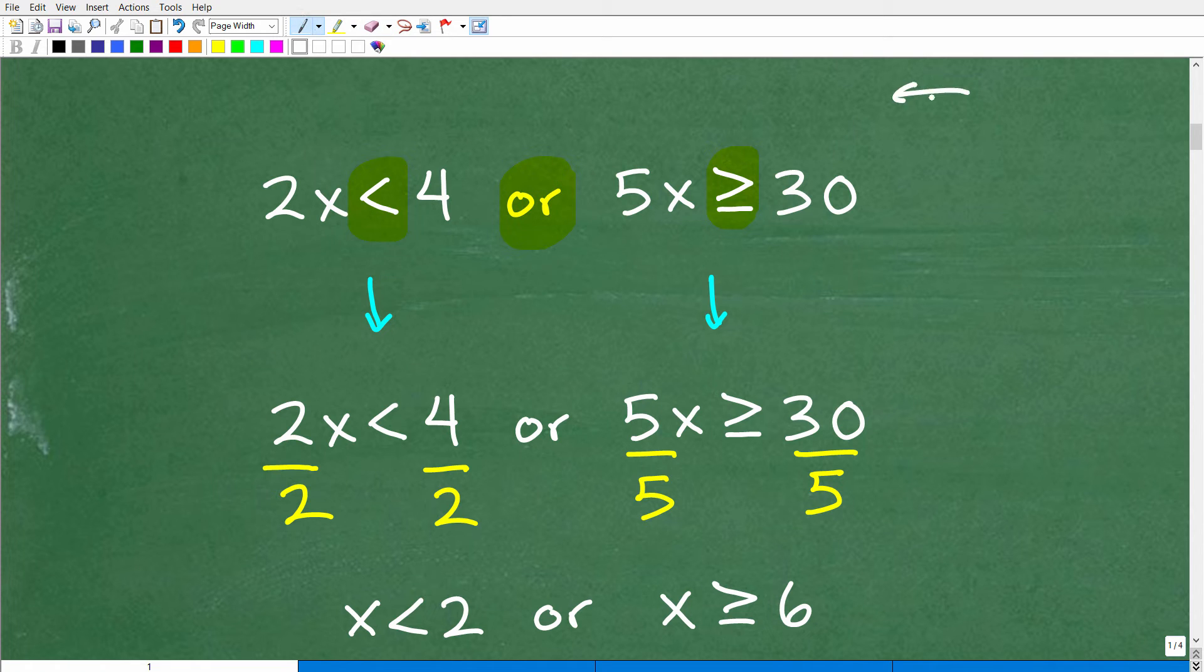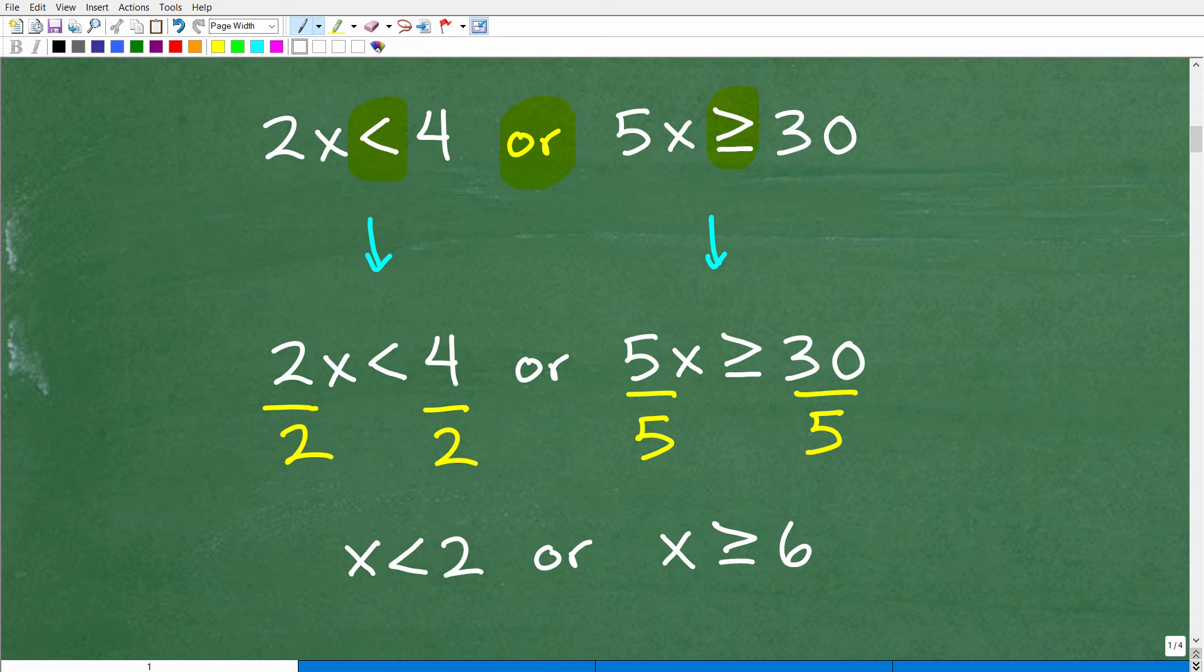But, how do we first kind of get to what x is equal to or get this down to solve this inequality? Well, we want to kind of like solve for x. So, we have 2x is less than 4. So, we want to get x by itself. So, here it's pretty simple. I'm going to divide both sides of the inequality by 2. So, we have x is less than 2. Or, over in this one, they got 5x is greater than or equal to 30. So, I'm just going to divide both sides of the inequality by 5. I get x is greater than or equal to 6.